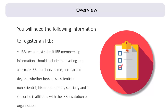IRBs who must submit IRB membership information should include their voting and alternate IRB members' name, sex, earned degree, whether he or she is a scientist or non-scientist, his or her primary specialty, and if she or he is affiliated with the IRB institution or organization.